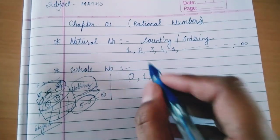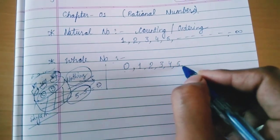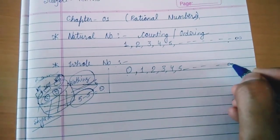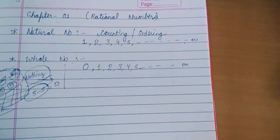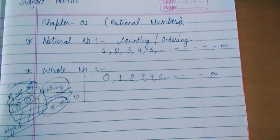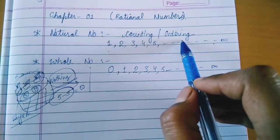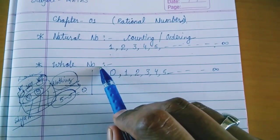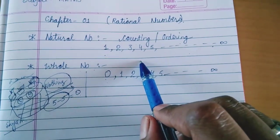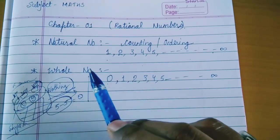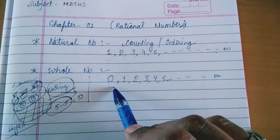The main difference between natural numbers and whole numbers is: natural numbers start with 1, because they are used for counting and ordering. Whole numbers start with 0, and also include the set of natural numbers, because whole numbers permit us to represent 'nothing' by zero.